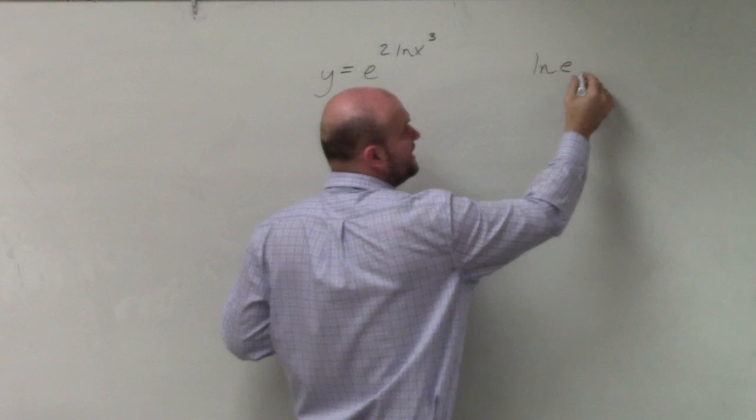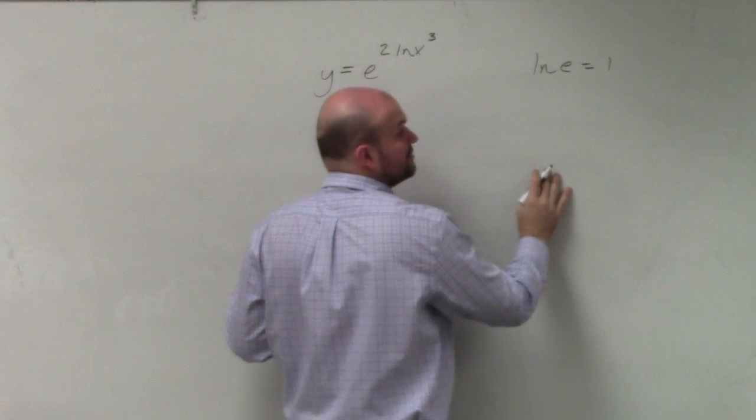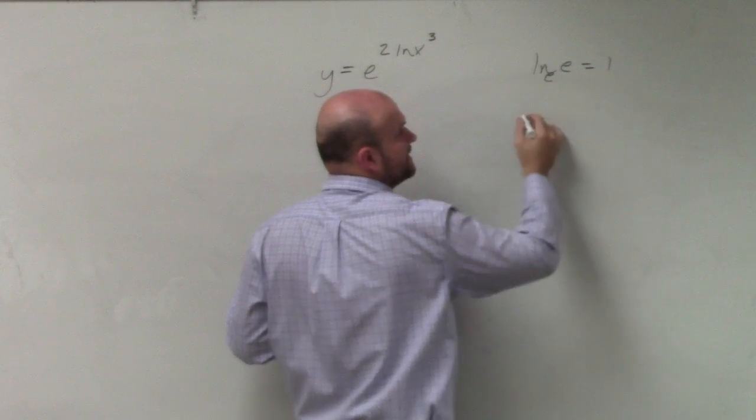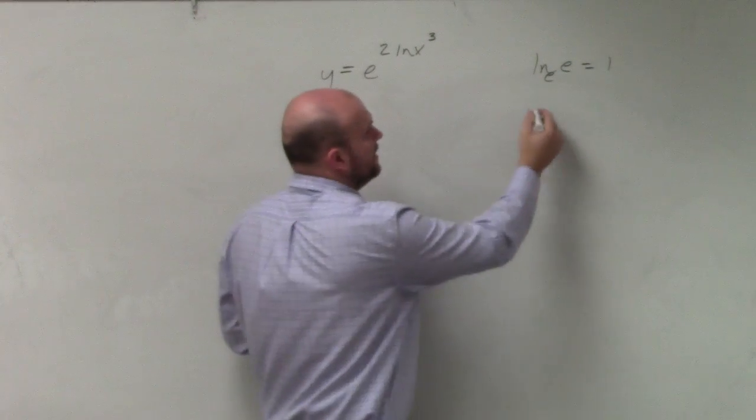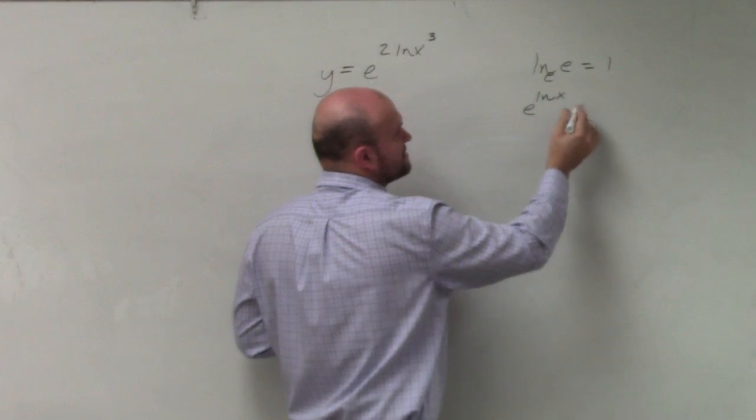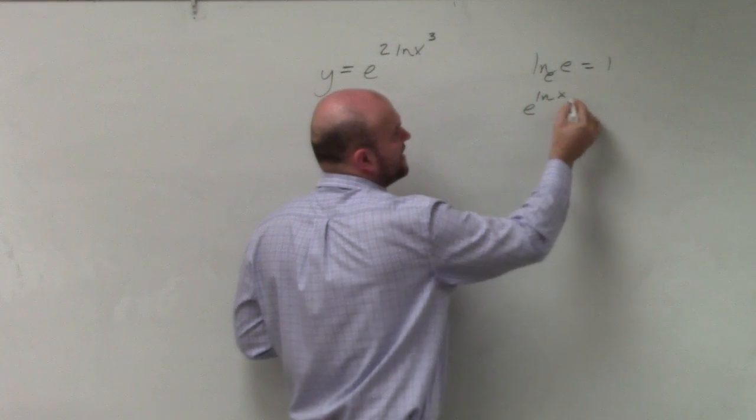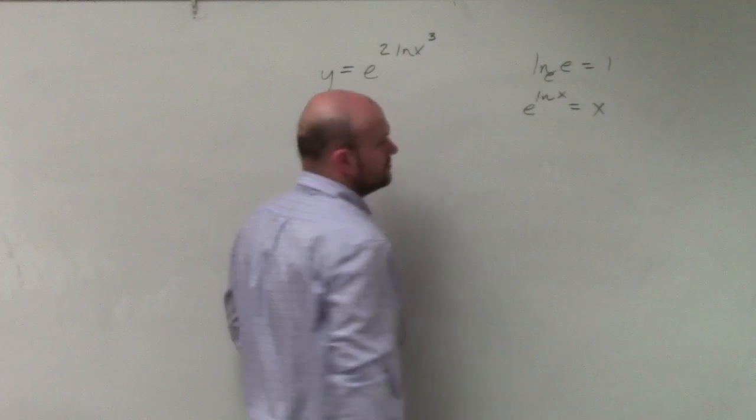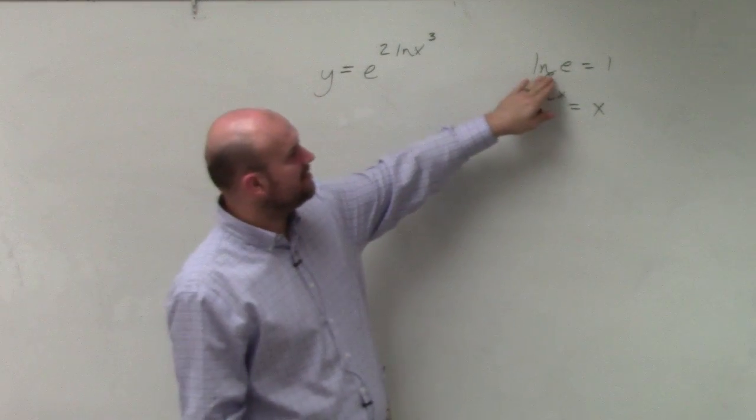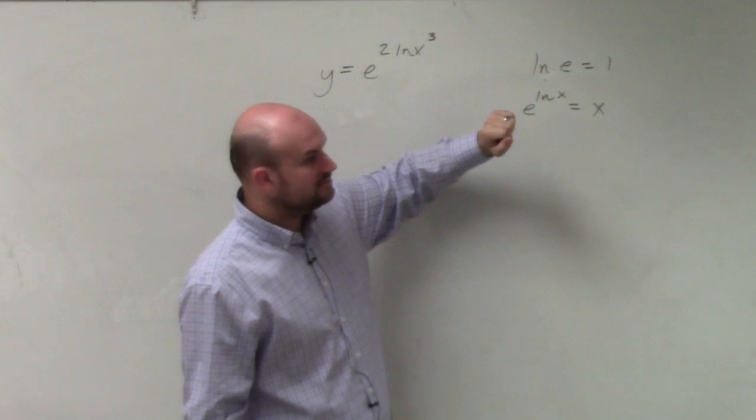Remember, ln of e is e raised to what power gives you e? That's going to be 1. And remember, e to the ln of x is just going to equal x. So remember a couple of these rules, because ln has a base e.